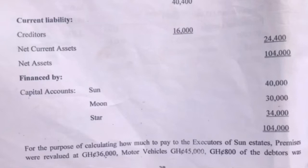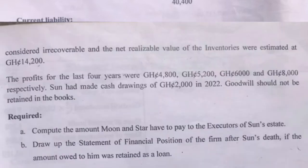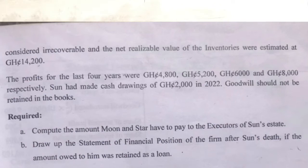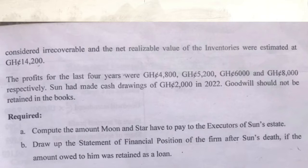For the purpose of calculating how much to pay to the executors of Sun's estate, premises were valued at $36,000, motor vehicles at $45,000. $800 of debtors was considered irrecoverable, and the net realizable value of inventory was estimated at $14,200. The profits for the last four years were $4,800, $5,200, $6,000 and $8,000. Sun had made cash drawings of $2,000 in 2022. Goodwill should not be maintained in the books. Required: (a) compute the amount Moon and Star have to pay to the executors of Sun's estate, and (b) draw up the statement of financial position of the firm after Sun's death if the amount owed to him was retained as a loan.